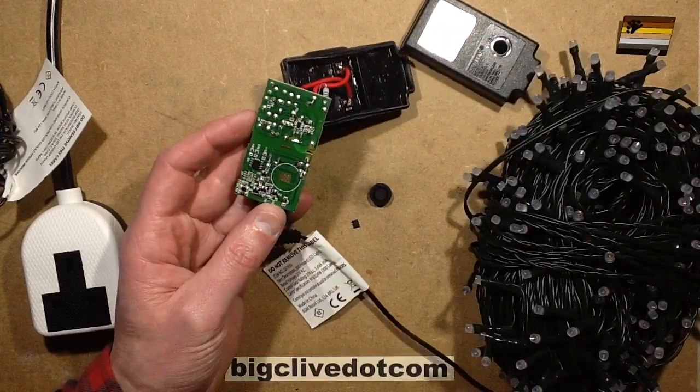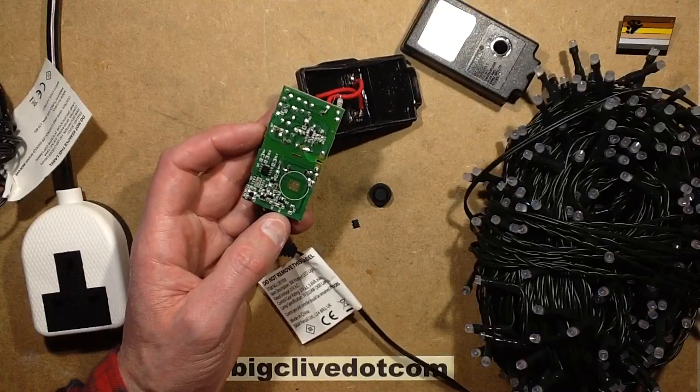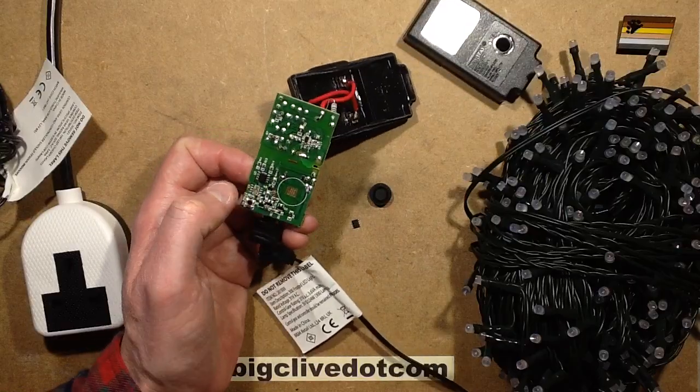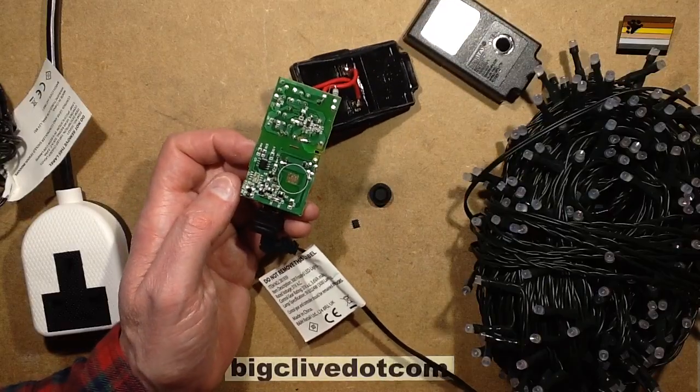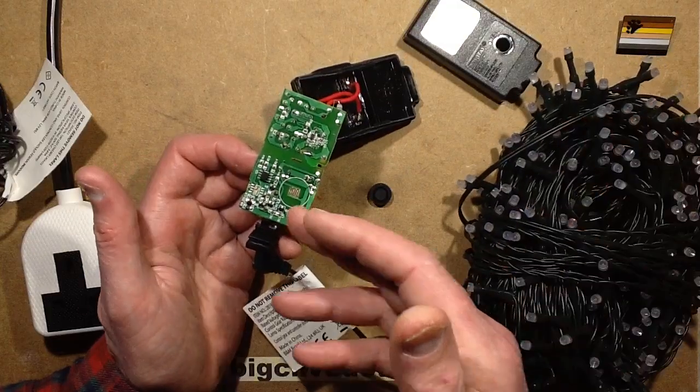And it was someone else who had taken them to bits and was trying to work out what everything was. And theirs had another chip in it. Theirs had a memory chip, 24C02, a C02B, to be precise. And they reckoned it was for storing the pattern. Obviously, it's not for storing the pattern, because the patterns run without the chip.